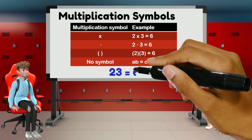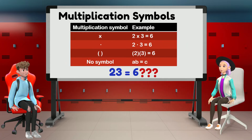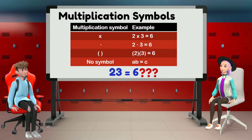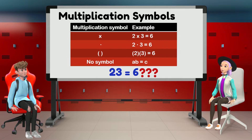This use of no symbol, however, is not applicable when writing down multiplication of just numbers. For the examples given on the table, 2 times 3 equals 6. We cannot simply write it down without any symbol in between 2 and 3, otherwise it is confusing. Use of a symbol is necessary for cases like this.